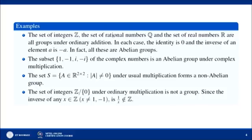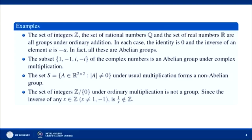The sets of integers Z, rational numbers Q, and real numbers R are all groups under ordinary addition. In each case the identity element is 0 and the inverse of any element A is -A. In fact, all these are abelian groups because they also satisfy the commutative property — for example, in the set of integers, A + B = B + A.